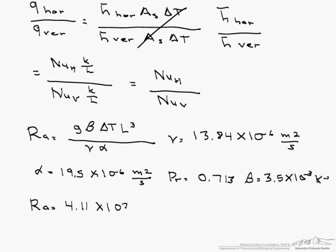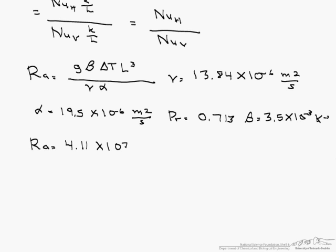So now we have to look up or find the proper correlation for each one of the sections. The first one we will start with is the horizontal correlation. Our horizontal Nusselt number is 0.069 times Ra to the 1/3 times Pr to the 0.074. And if we calculate that, that is 23.2.